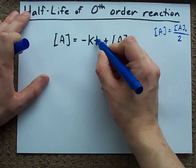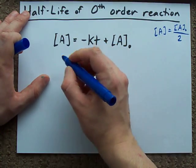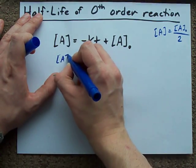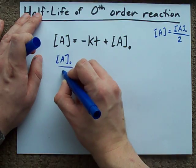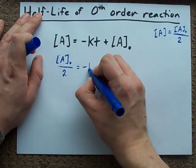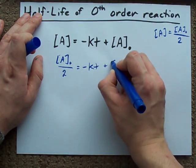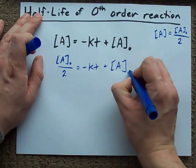So all I need to do is solve for T, the amount of time elapsed, for my concentration to reach the initial concentration divided by two. Solving for T, one of my favorite things to do.